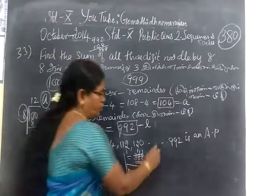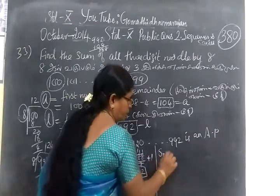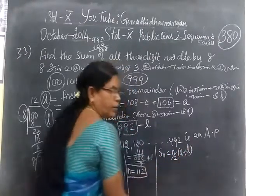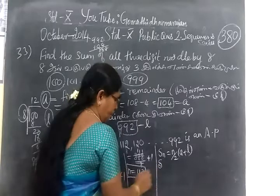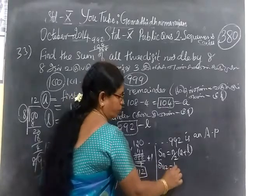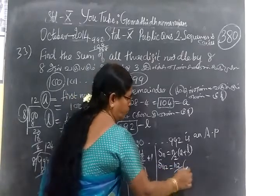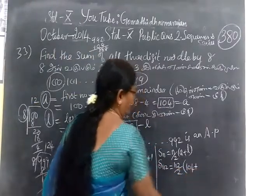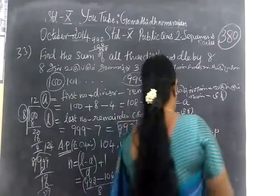Now you have to find the value of SN. SN equal to formula n by 2 bracket A plus L. N equal to 112, so 112 by 2. A is 104 plus L, L equal to 992.